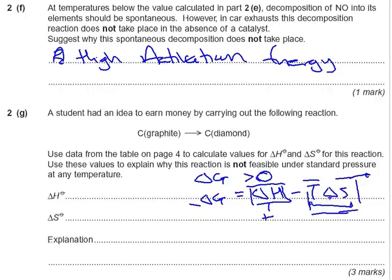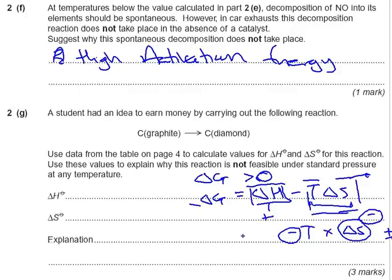The way to think about it is: if we take minus T times delta S, and delta S is negative, then a negative multiplied by a negative gives a positive, so that term is always positive. Combined with a positive delta H, delta G is always going to be bigger than zero. So I'm expecting delta H to be positive and delta S to be negative.